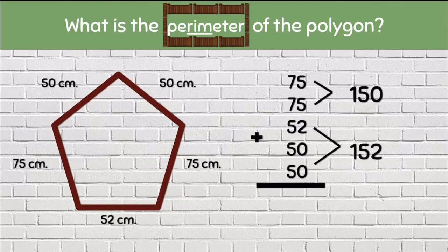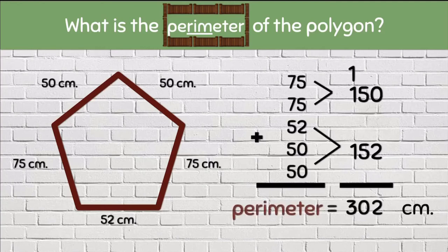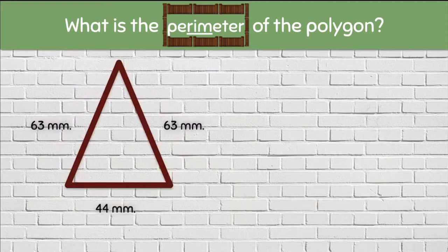Now we can add 150 plus 152. We will get two. Then we can carry our one and bring down the zero and one plus one plus one is three. That means that the perimeter of this pentagon is 302 centimeters. Here we have a triangle with three sides.